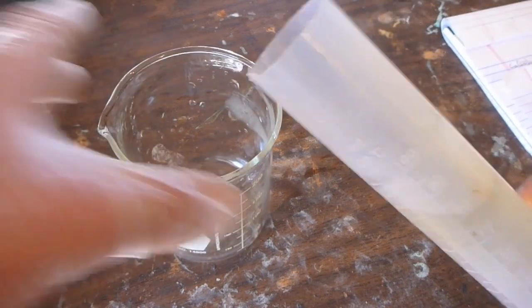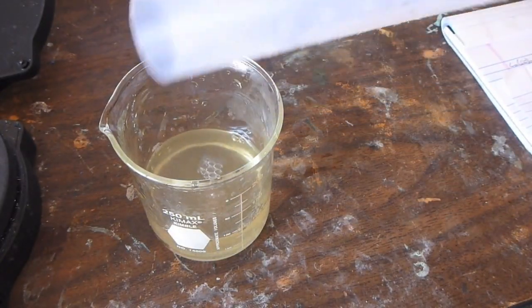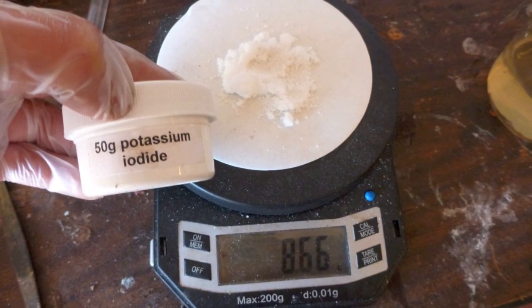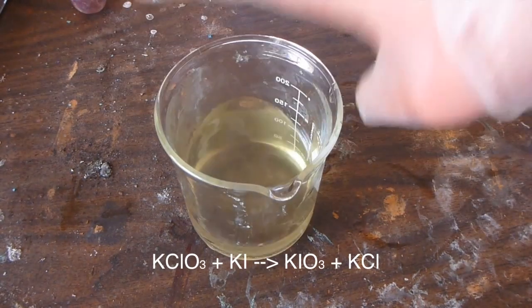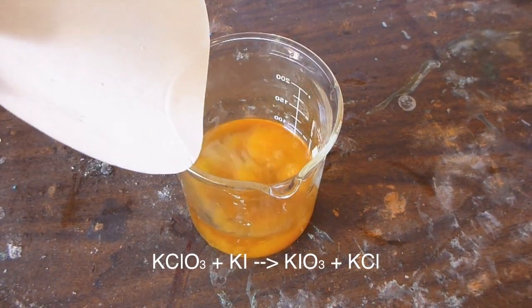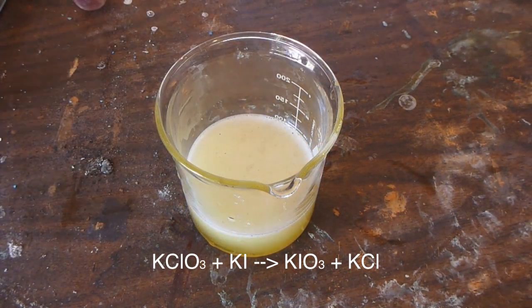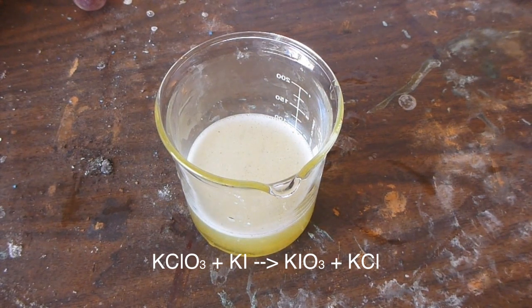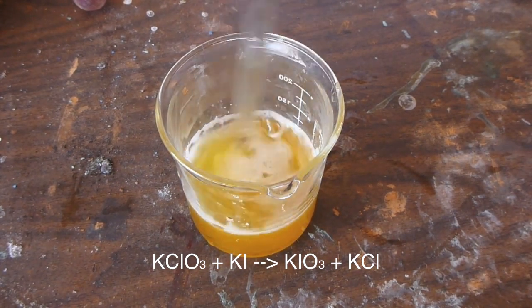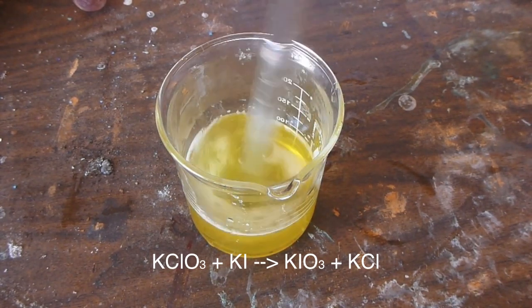Now take the solution you got and pour it into a beaker. Now weigh out 8.66 grams of potassium iodide and add it to the solution. You'll see the solution slightly yellowish at first because of dissolved chlorine, but it gets quite a bit redder, and then as you stir, it'll get lighter again. I believe this is because of some elemental iodine in solution, which then immediately gets taken up again into iodate. So now you've created potassium iodate.